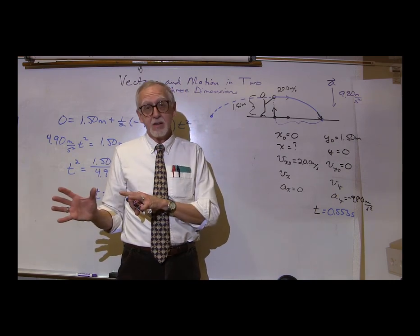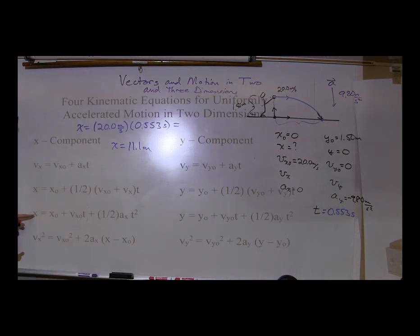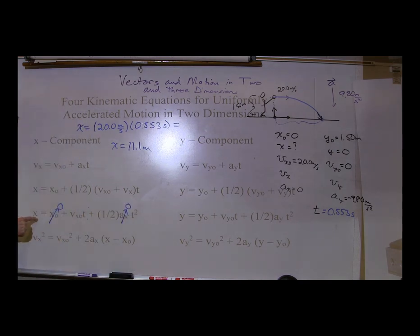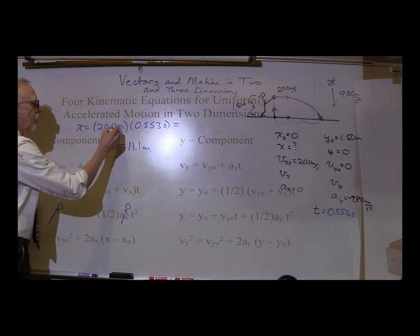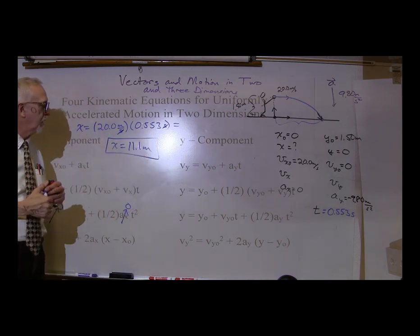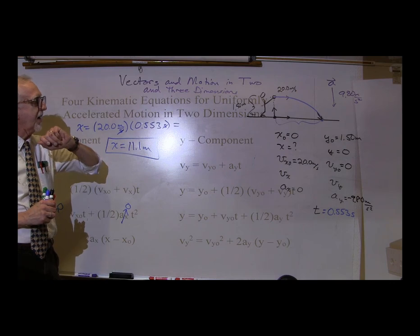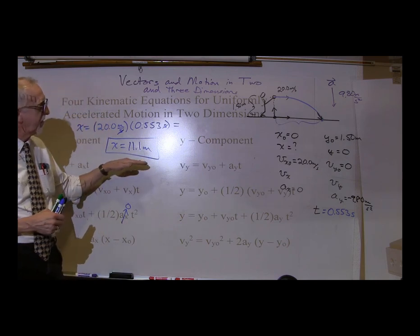Now we go back to the x equation. Since x0 is 0 and ax is 0, all we have is x = vx0·t = 20 meters per second × 0.553 seconds. The seconds cancel, leaving meters, and multiplying gives us 11.1 meters. Does that seem reasonable? Throwing at 20 meters per second from a height of 1.5 meters and it travels 11 meters — yes, that seems pretty reasonable. Very, very good. Let's try another one.